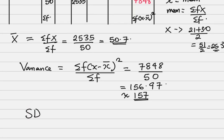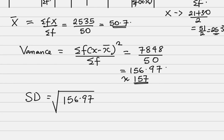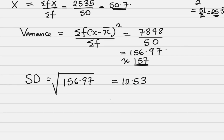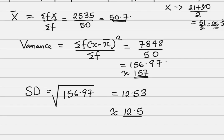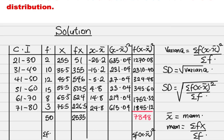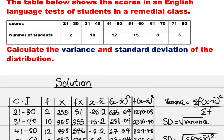We now have our variance, so we move to find standard deviation (SD). SD is the square root of the variance. Use the raw value 156.97 — don't use the approximated value. The square root of 156.97 is 12.53, which to one decimal place is approximately 12.5. This is how to find standard deviation — keep watching and make sure you subscribe. Thank you so much for being with me.